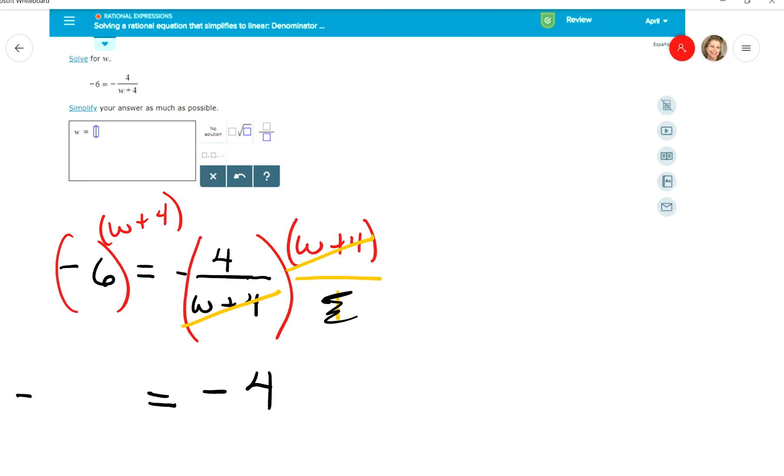But then on the other side, I still have the negative 6 and I still have the W plus 4. So it's now no longer fractional, but I'm going to have to use the distributive property to clear out these parentheses. Negative 6 times W is negative 6W, and negative 6 times 4, this is really a plus 4 here, that's going to change it to minus 24 equals negative 4.